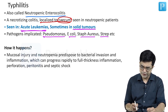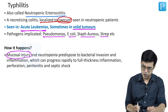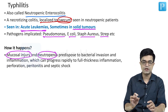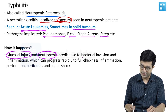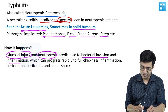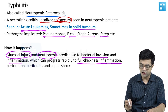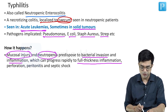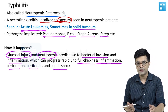How does it happen? There is initially mucosal injury along with neutropenia — these are the two factors which combine to produce this problem. There is extensive bacterial invasion and inflammation. It quickly spreads to full thickness or transmural inflammation. There can be perforation, peritonitis, and septic shock. To understand it better, let us have a look at a flow chart.